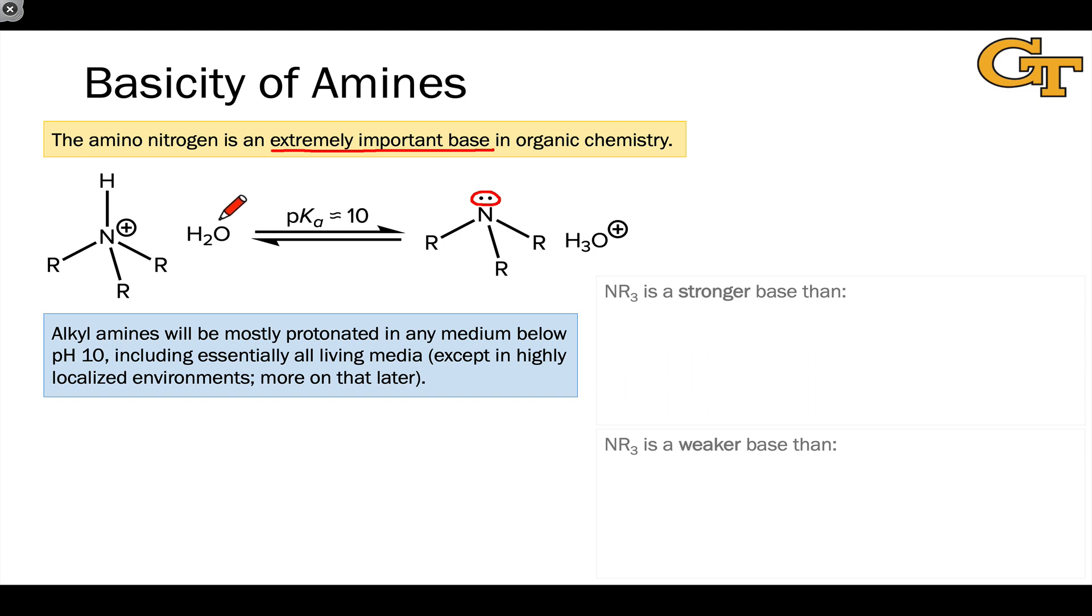If we look at the proton transfer reaction between water and an ammonium ion, the conjugate acid of a neutral amine, we find that the pKa of the ammonium ion is about 10, and this is relatively high. This positively charged group is much less acidic than, for example, a carboxylic acid which has a pKa around 5. In fact, this pKa is more on par with the acidity of phenol, pHOH, which just goes to show you how stable this positively charged ammonium ion is.